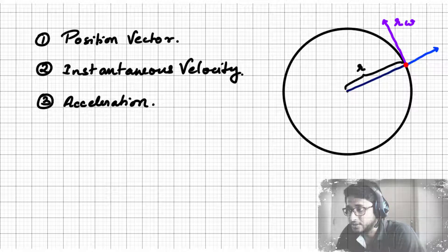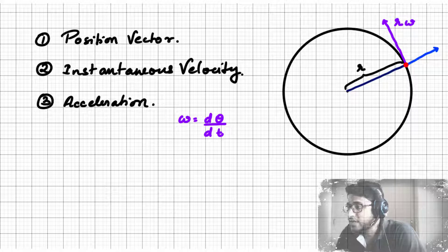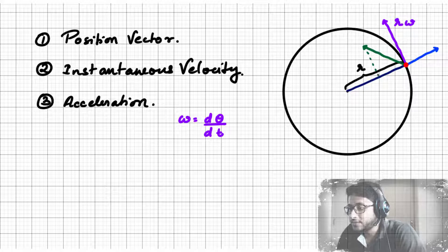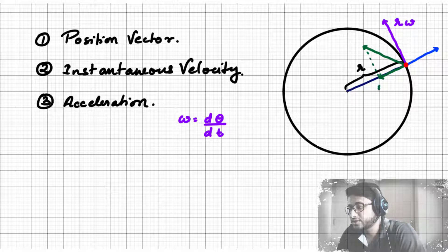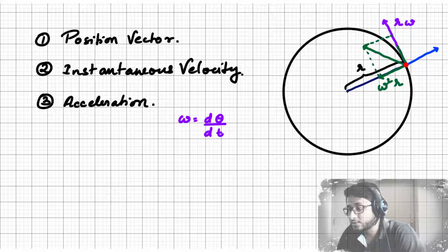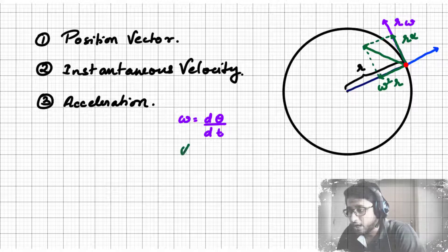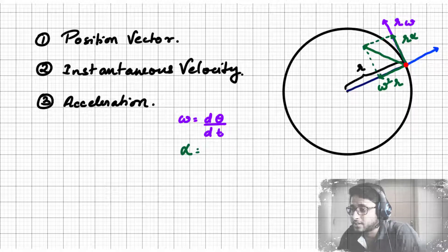Where ω represents the angular velocity. After that, we differentiated the instantaneous velocity to get the acceleration. We found that the acceleration had two parts: one was along the direction opposite to the radial unit vector with a magnitude of ω²r, and the other was along the tangential unit vector with a magnitude of r times α, where α represents the angular acceleration and r is the radius.